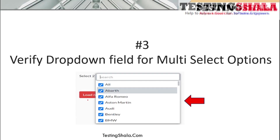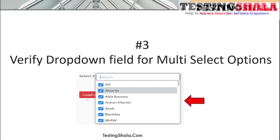There are certain dropdowns that allow selecting multiple values, and these will have a checkbox next to each item listed. You should validate all different combinations for the checkbox plus the dropdown — whichever items are selected via the checkbox should be reflected as part of the dropdown selection.